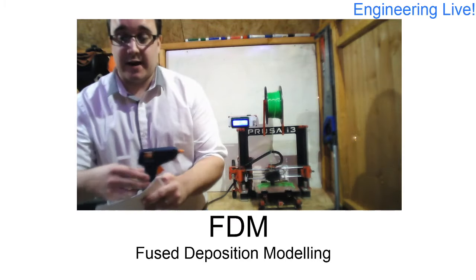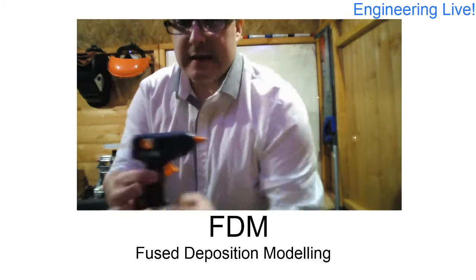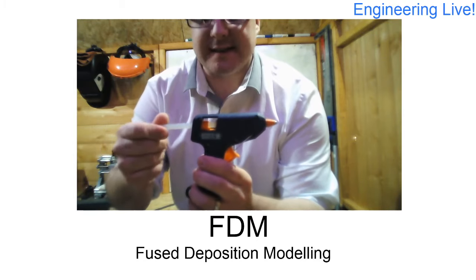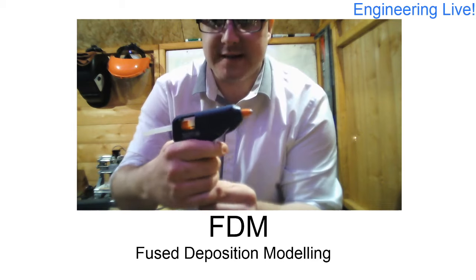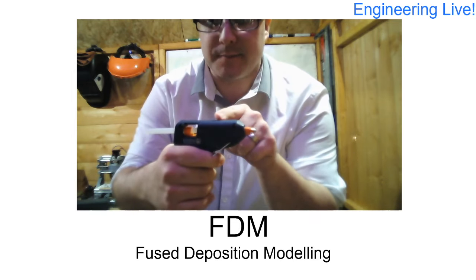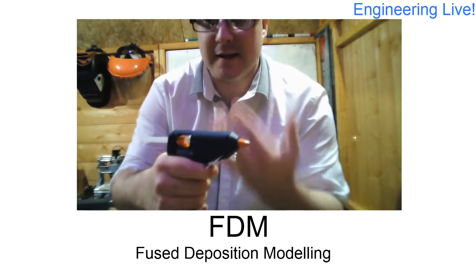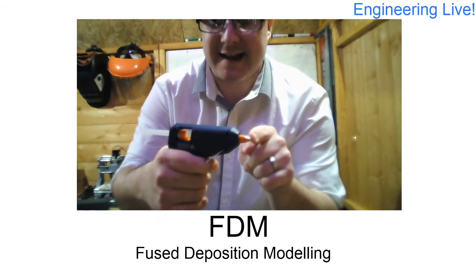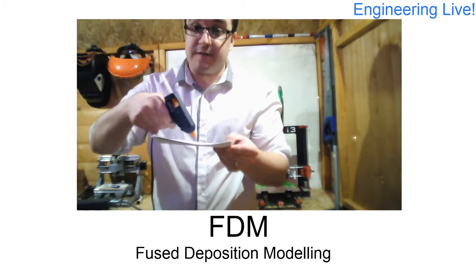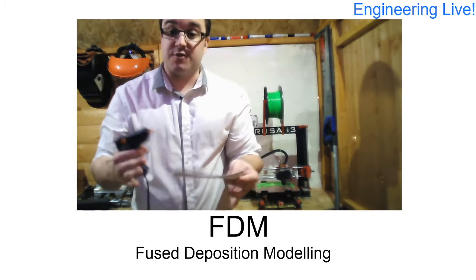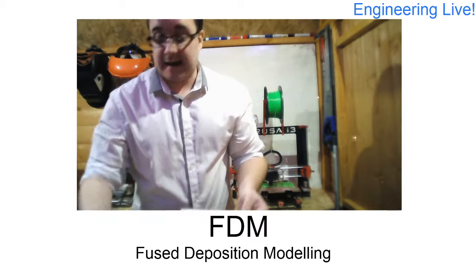It actually works in the same way as this hot glue gun. So we load in our material, we load in this, in this case the glue stick, into the glue gun. As we squeeze the trigger it heats it up in this chamber here which melts the hot glue and pushes it out of the nozzle. If we were to build up layers of hot glue on a surface we could create a really crude 3D part. So that's how it works.